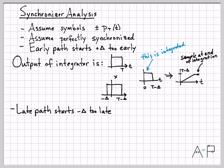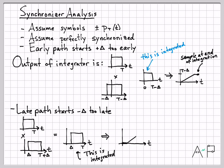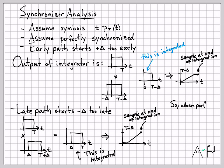On the late path, we start delta too late, still integrating for duration T. The product rectangle starts at delta and stops at T. The integrator sits at zero initially, then ramps up linearly. The area of that rectangle is T minus delta (base times height of one), so the value at the end of integration is also T minus delta.